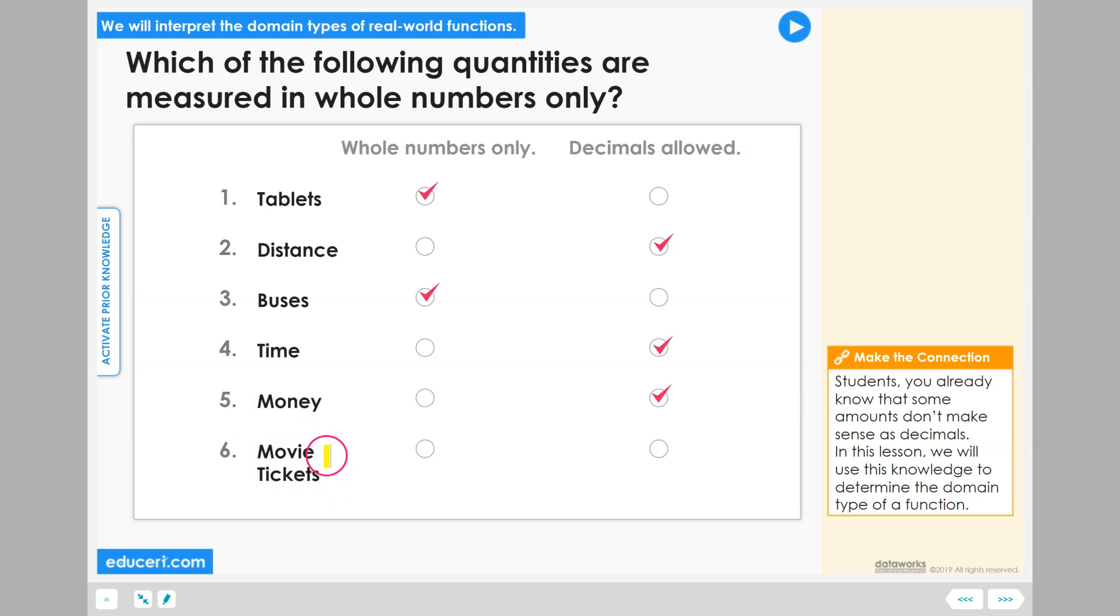Movie tickets. You can have one movie ticket, two movie tickets, but if you had half a movie ticket, they probably wouldn't let you into the movie. You would need to have one full movie ticket for it to allow you to go into the movie as it's intended. So counting movie tickets would be a quantity that would be measured in whole numbers only.